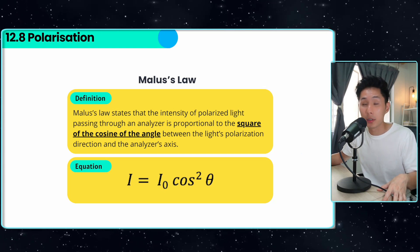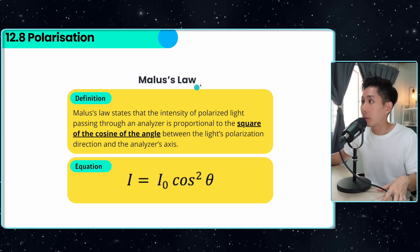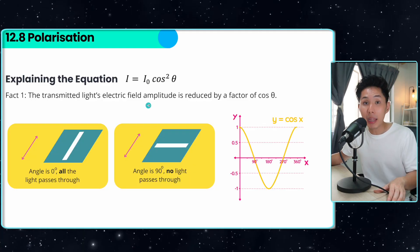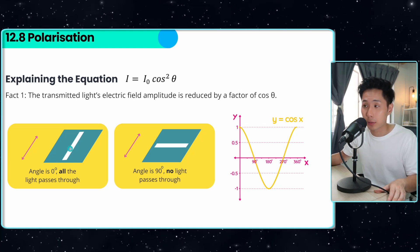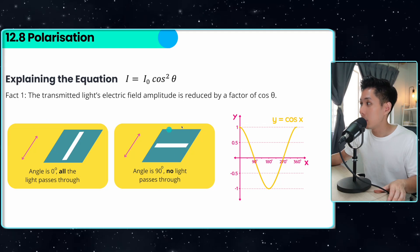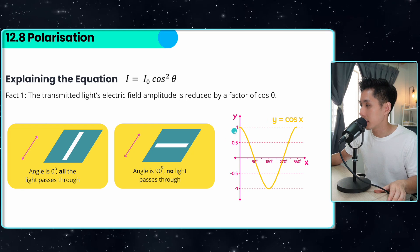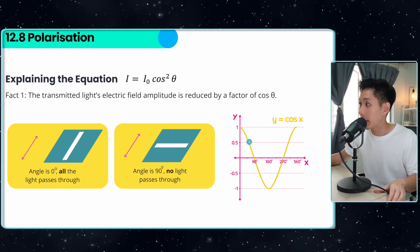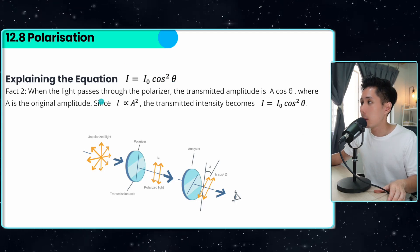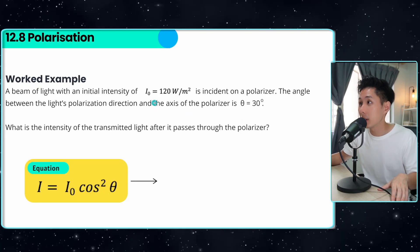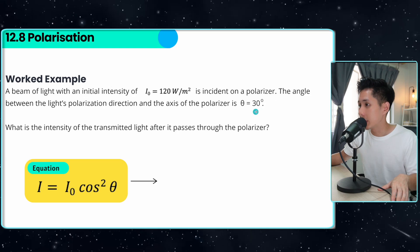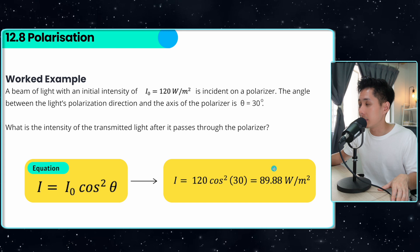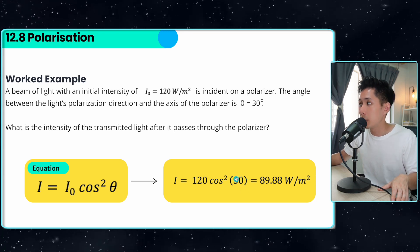What if the polaroid is arranged at an angle — say 45 or 30 degrees? That's where Malus's law helps us identify how much light passes through. The equation is I = I₀cos²θ. When the angle is 0 degrees, all the light passes through; when the angle is 90 degrees, no light passes through at all. This follows a cosine graph. The squared term comes from the relationship between amplitude and intensity (I ∝ A²). For example, with an initial intensity of 120 units and an angle of 30 degrees, substituting into the equation gives the intensity of the transmitted light — you can see it decreases.